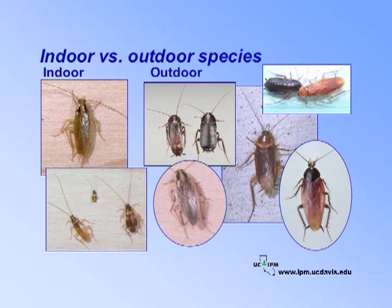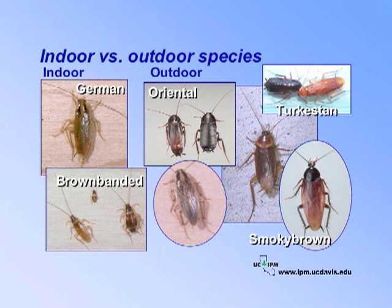Two cockroach species live indoors, and the rest prefer to live outdoors. Outdoor roaches sometimes invade buildings looking for food, water, and shelter. The most serious problems involve species that inhabit buildings, usually the German cockroach. The brown-banded cockroach is also an indoor species, but requires warmer temperatures. There are five cockroach species that commonly live outdoors: the Oriental, Turkestan, Smoky Brown, American, and Field. It is important to determine whether your roach is an indoor or outdoor species to choose the most effective management practices.